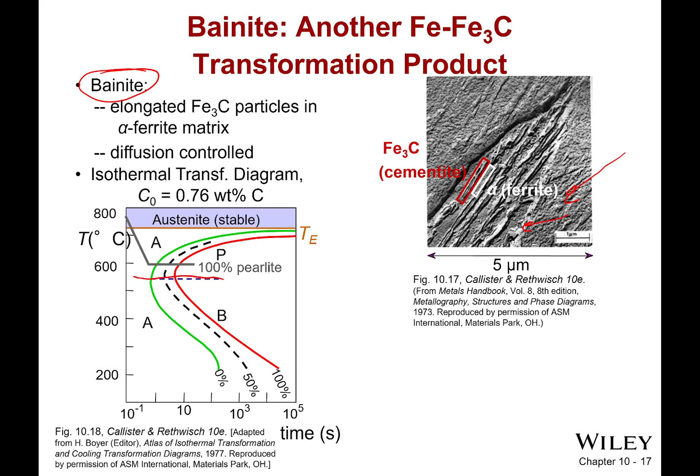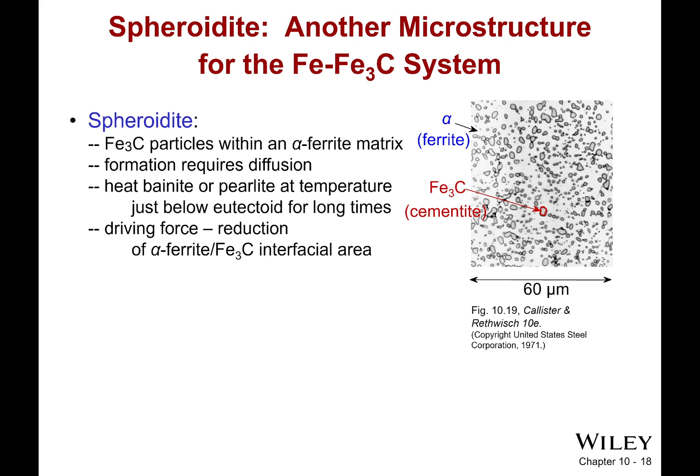So showing another little example here. So right here, if I cool down to that temperature and just leave it, 100% perlite. If I go down to that temperature and leave it, that's 100% bainite. The question you might have is, well, can I have a mixture? And the answer is yes. We'll show you an example of that a little bit later.